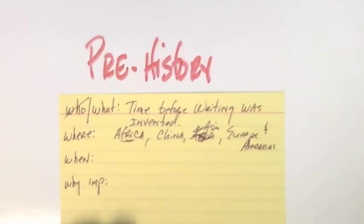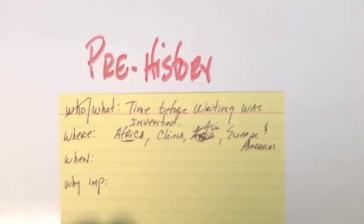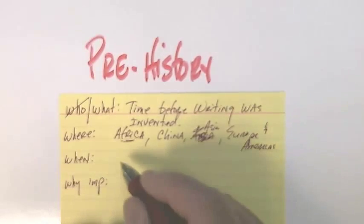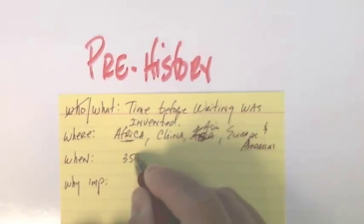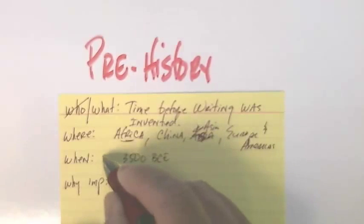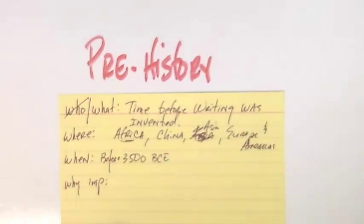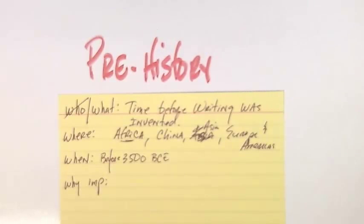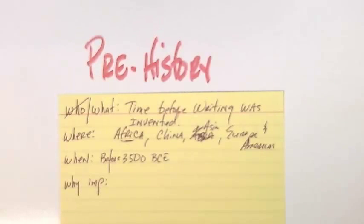The when: most civilizations develop writing right around 3500 BCE. So prehistory is going to be before that. The four major civilizations we'll talk about — Egypt, Middle East, India, and China — all develop writing at a different time, but this is a good basic ballpark figure. Sometimes when we do the when, it's not going to be a nice little neat date like July 4th, 1776. Sometimes we're going to have to make our best closest estimation.